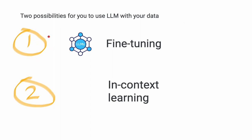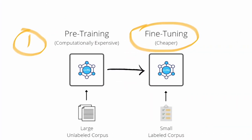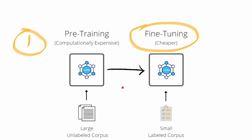Option number one is fine-tuning. Fine-tuning is a much better option than pre-training because pre-training is computationally expensive. It usually requires a large unlabeled corpus and takes greater than 10 or maybe even 100 million dollars to make this happen. For companies, it's better to go down the path of using this cheaper option, which is fine-tuning.